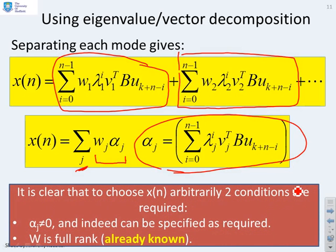It's clear that if we want to choose x of n arbitrarily, we need two conditions. I'm basically pulling on video 2 from this series. What we've said is x of n can be chosen arbitrarily as long as these w j's span the space, which means that the matrix w has to be full rank, which we know already.